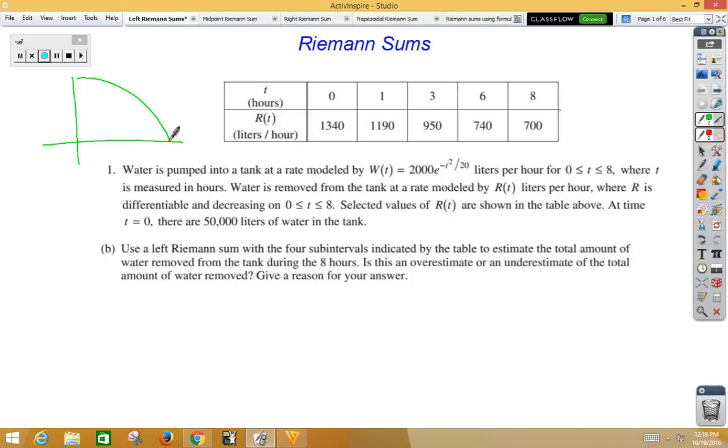a left Riemann sum from, let's say, A to B would be a series of rectangles where the top left corner of your rectangle is touching the curve. Notice there's error, and we'll be talking about error as we do more and more Riemann sums.